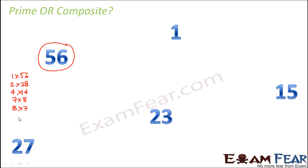So 8? Yes. 8 into 7 is 56. Then 14 into 4 is 56. 28 into 2 is 56. And 56 into 1 is also 56. So considering these we can say that it has multiple factors. So how many factors does it have? 1, 2, 4, 7, 8, 14, 28 and 56. So it has 1 and the number itself. Besides that also it has so many factors. So it has more than 2 factors. Therefore it is a composite number.